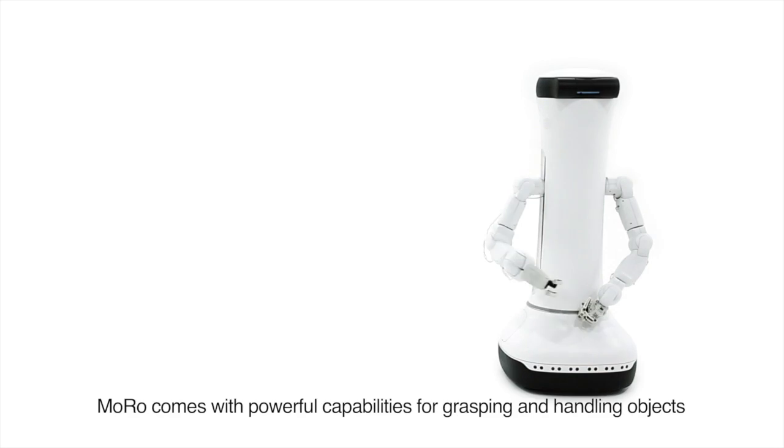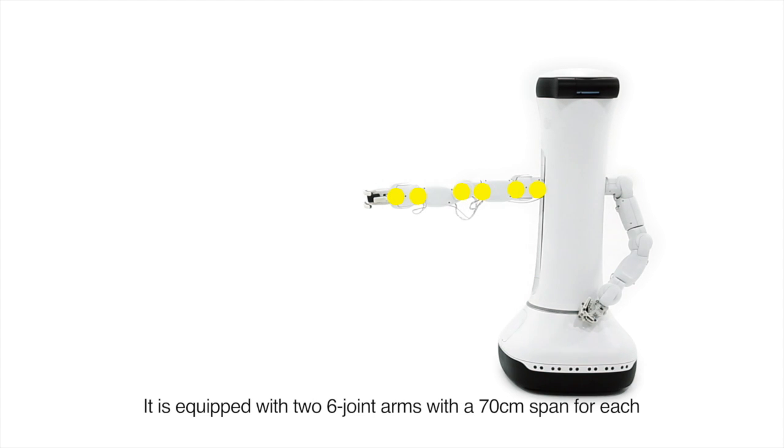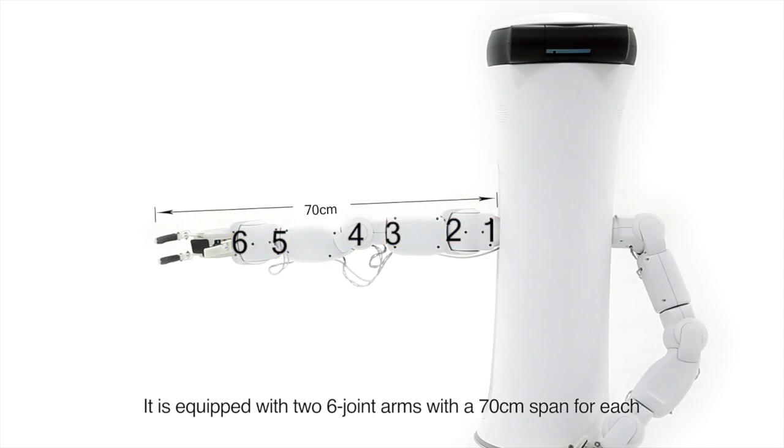Moro comes with powerful capabilities for grasping and handling objects. It is equipped with two six-joint arms with a 70cm span for each.